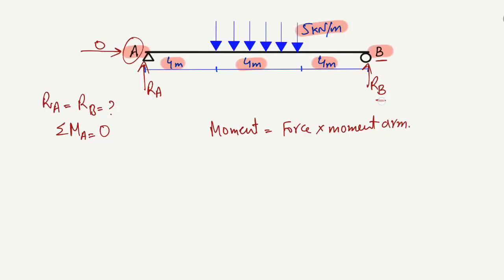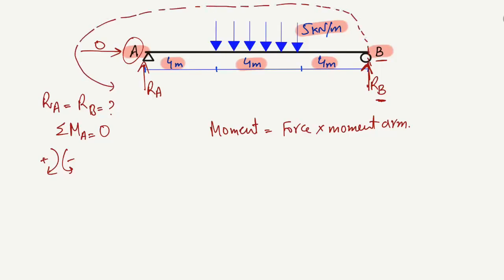We assume clockwise moment is positive and anti-clockwise moment is negative. The Rb force acts upward at B, and it creates a moment about point A in the anti-clockwise direction, so it is negative. Therefore: minus Rb multiplied by the moment arm, which is the perpendicular distance from B to A — that is 4 + 4 + 4 = 12 meters.